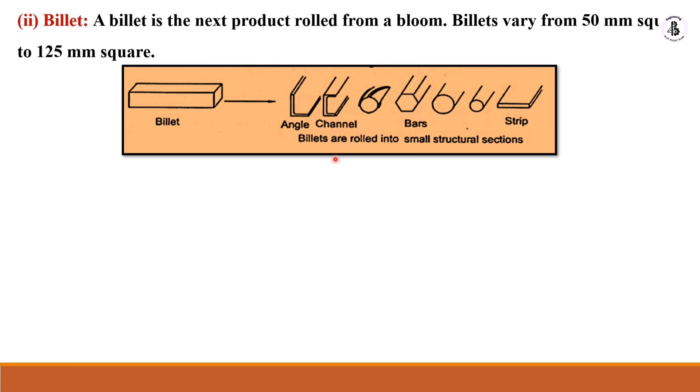If you have a requirement of small size structural components or sections, you should go for the billet. So first, bloom is converted into billet, and this billet is further converted into required shape and size.